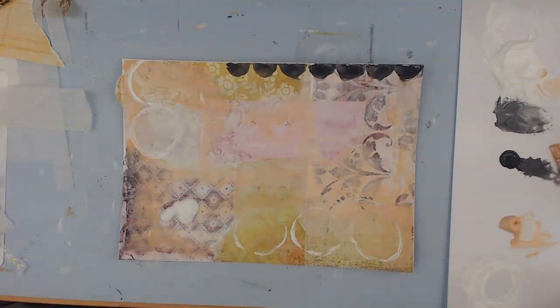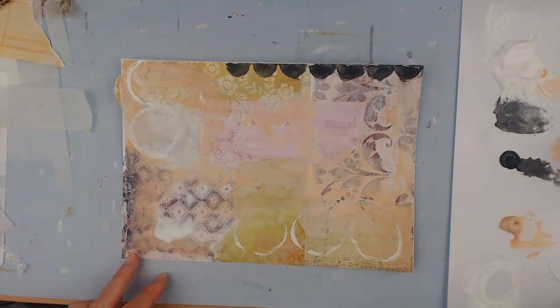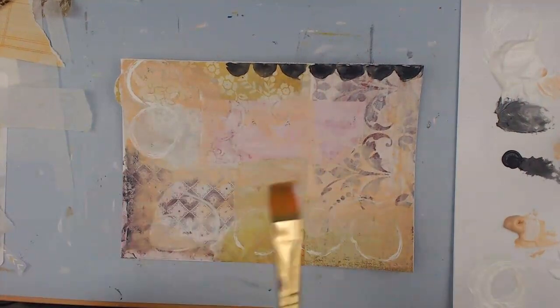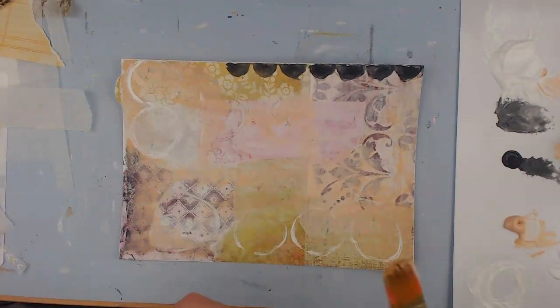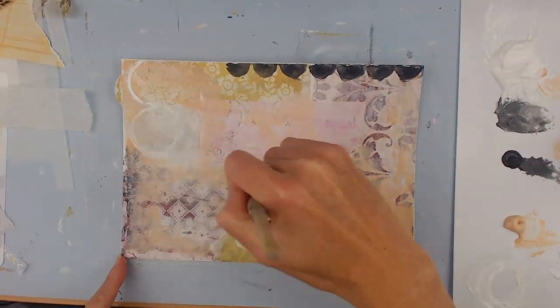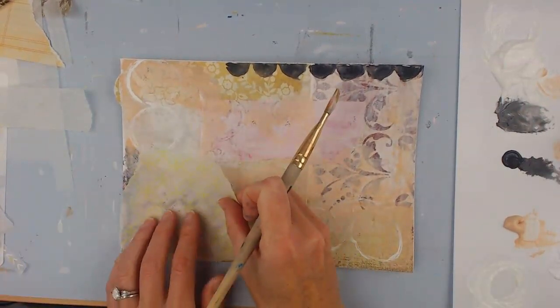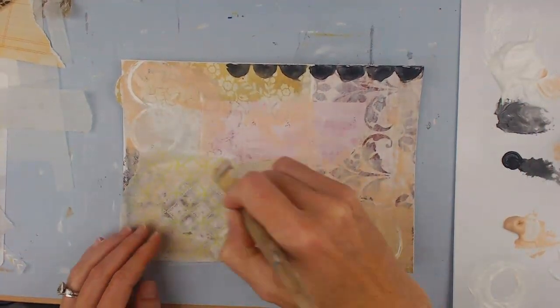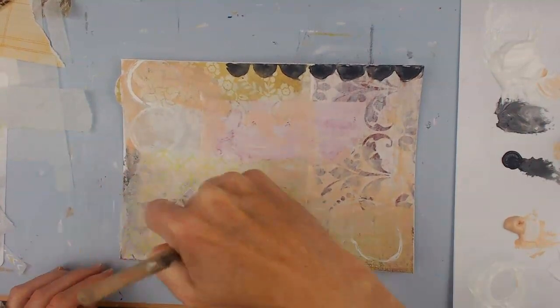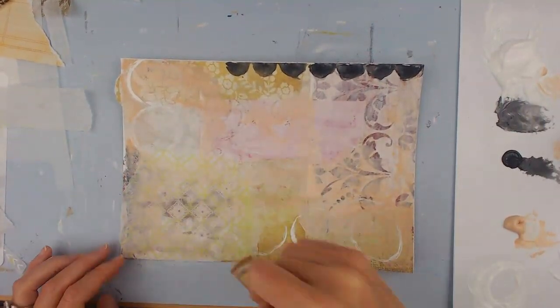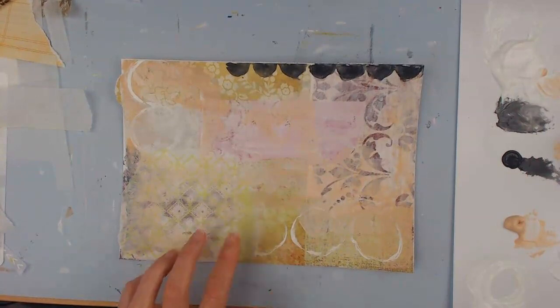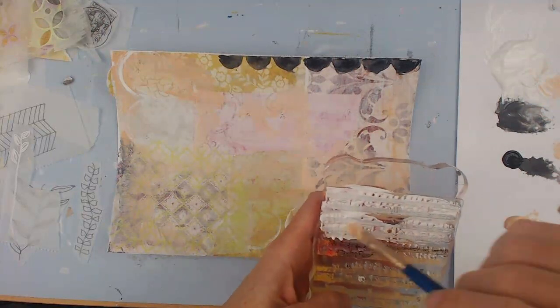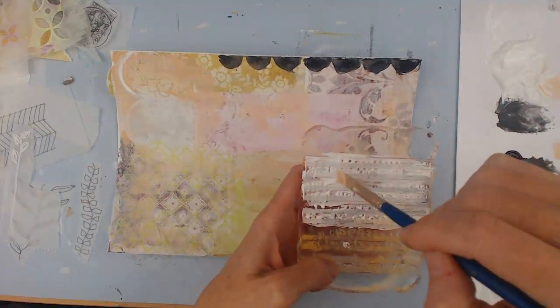So next here I have some prints from deli paper. You can print on them from your printer at home, and you can also use a jelly plate and make prints with acrylic paints. I love using deli paper as a layering piece because you can still kind of see the color underneath, but it also gives a little hint of a different pattern and color.